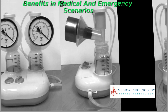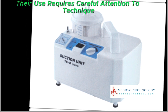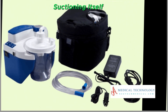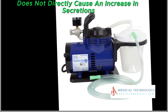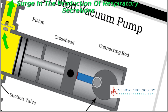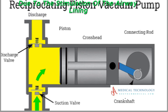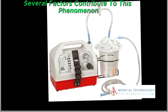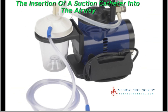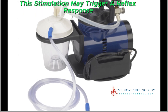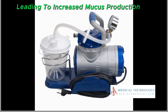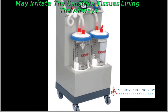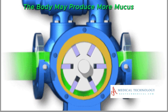In summary, while suction machines provide valuable benefits in medical and emergency scenarios, their use requires careful attention to technique, maintenance, and patient considerations to minimize potential risks and optimize patient outcomes. Suctioning itself does not directly cause an increase in secretions; however, the act of suctioning can potentially lead to a temporary surge in respiratory secretions due to stimulation of the airway lining — often a reflex response to irritation. Several factors contribute to this: airway stimulation from the insertion of a suction catheter may trigger a reflex increase in mucus production, and tissue irritation from aggressive or frequent suctioning may cause the body to produce more mucus as a protective mechanism.